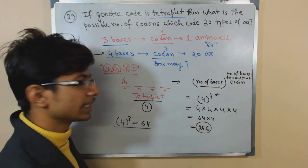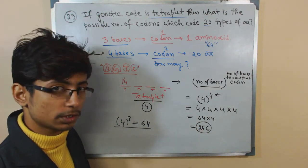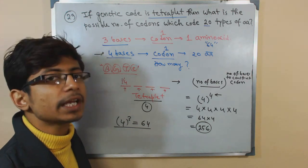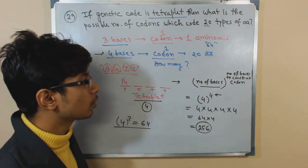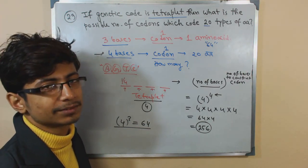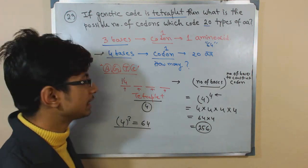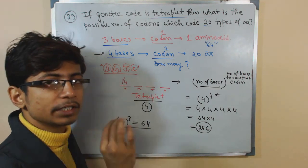So 256 will be the number of codons that should be required to construct 20 types of amino acids if the codon becomes tetraplate. That is a very easy problem, but this is the idea you need to clear in your mind.